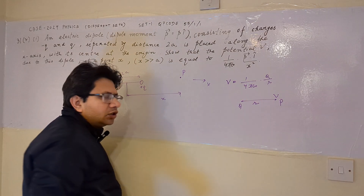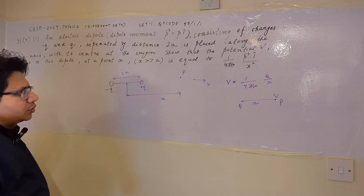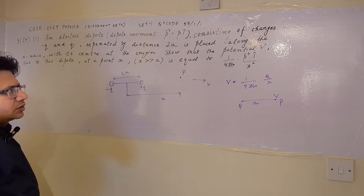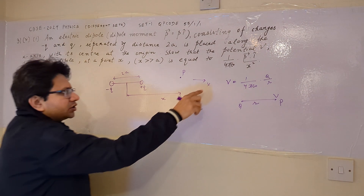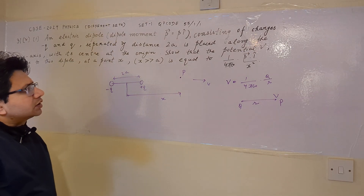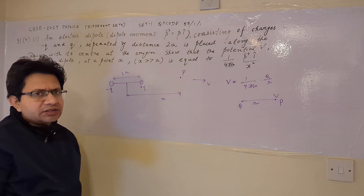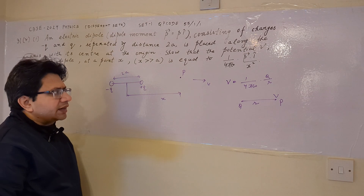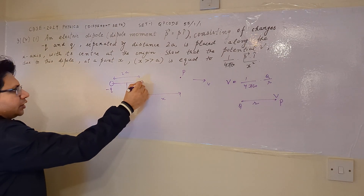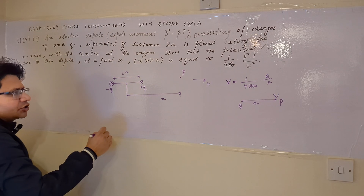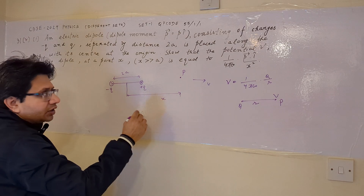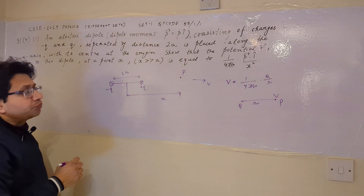This is the formula we are using to solve this problem. Since the potential is a scalar quantity and not a vector quantity, only the respective sign is taken, not the direction. So we find the individual potentials due to each charge and then add them algebraically.